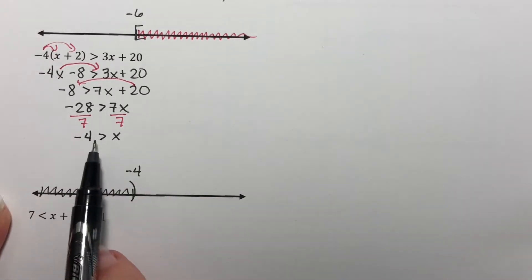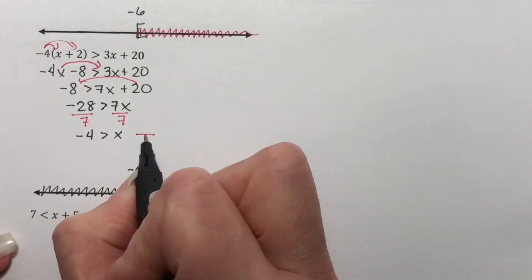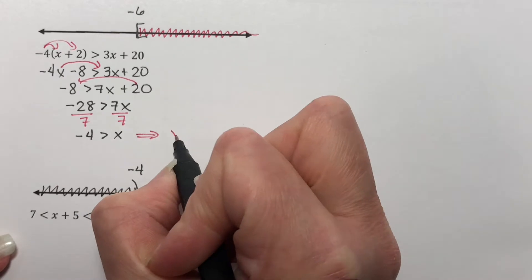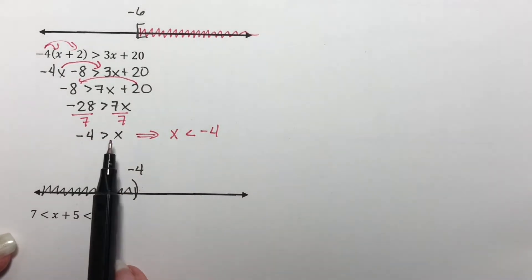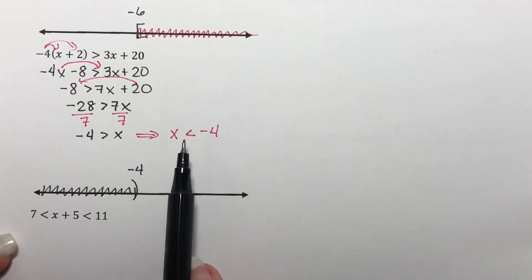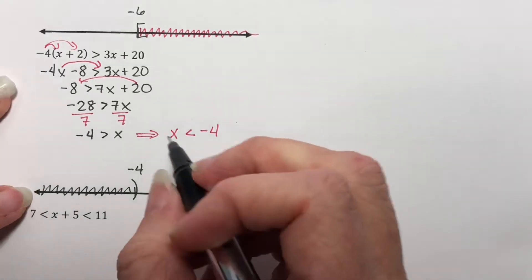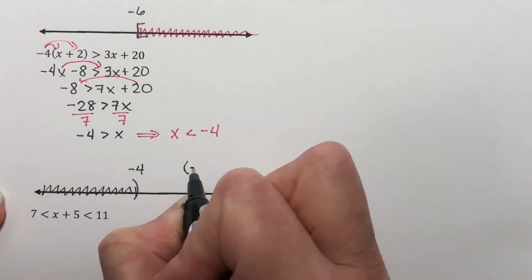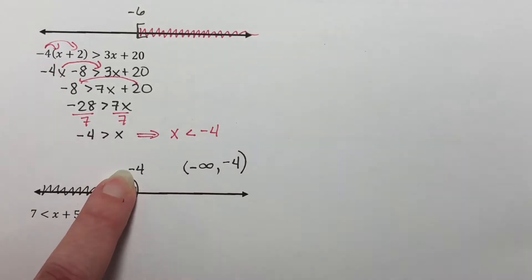Notice that we do not shade the direction this points because our x is not on the left. If you want to, you can switch this around to x is less than negative 4. If you flip the direction of an inequality, you have to flip the sign around — these are equivalent statements. You have to remember that the x needs to be on the left before you can do that. For interval notation, the left-hand boundary is at negative infinity, which always gets parentheses, and it goes up to negative 4 in close parentheses.